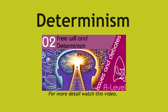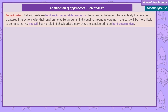Determinism. Behaviourists are hard environmental determinists. They consider behaviour to be the result of experiences — the interactions creatures have with their environment. Behaviour an individual has found rewarding in the past is more likely to be repeated. As there is no role for free will in behaviourist theory, they are seen as hard determinists, assuming behaviour is fully caused by the environment.